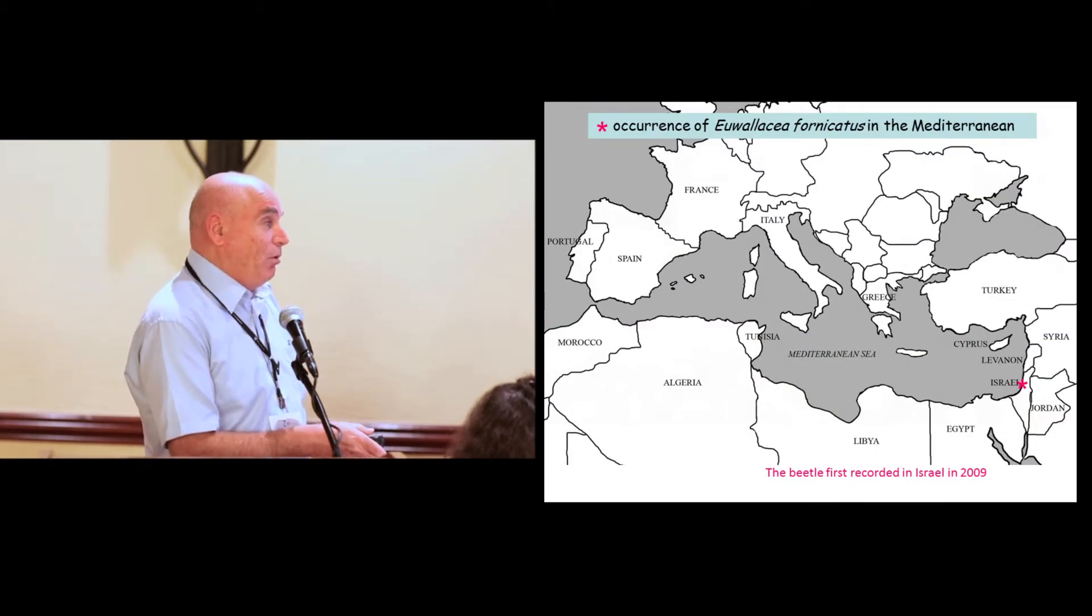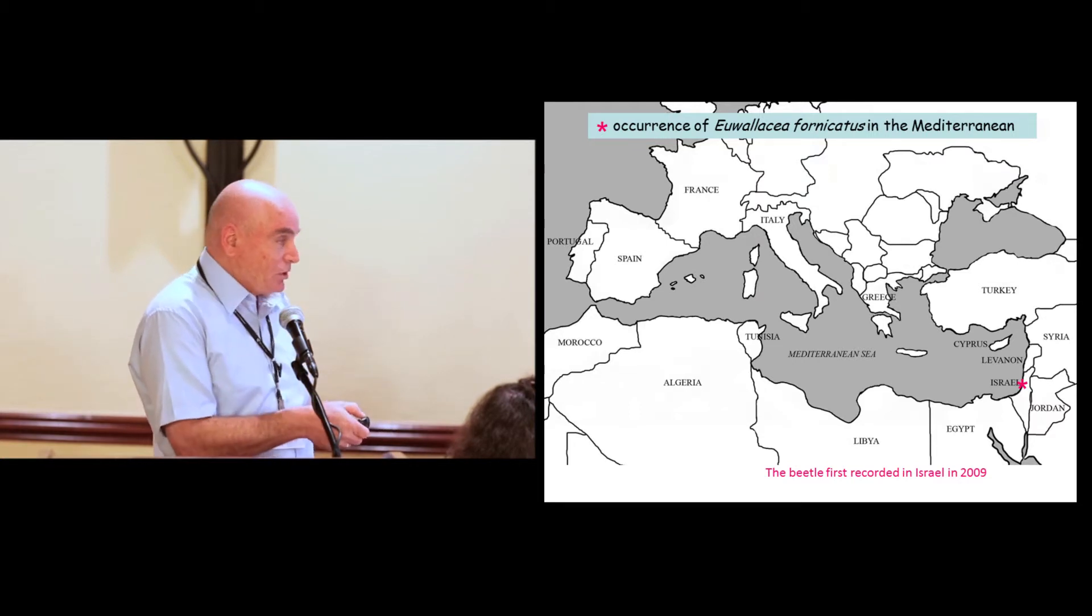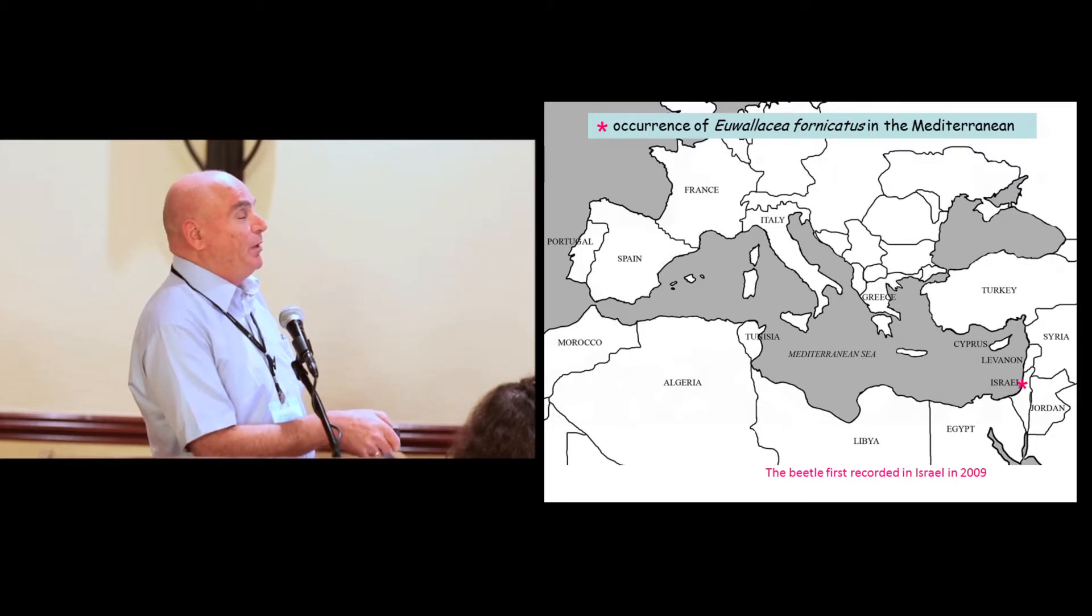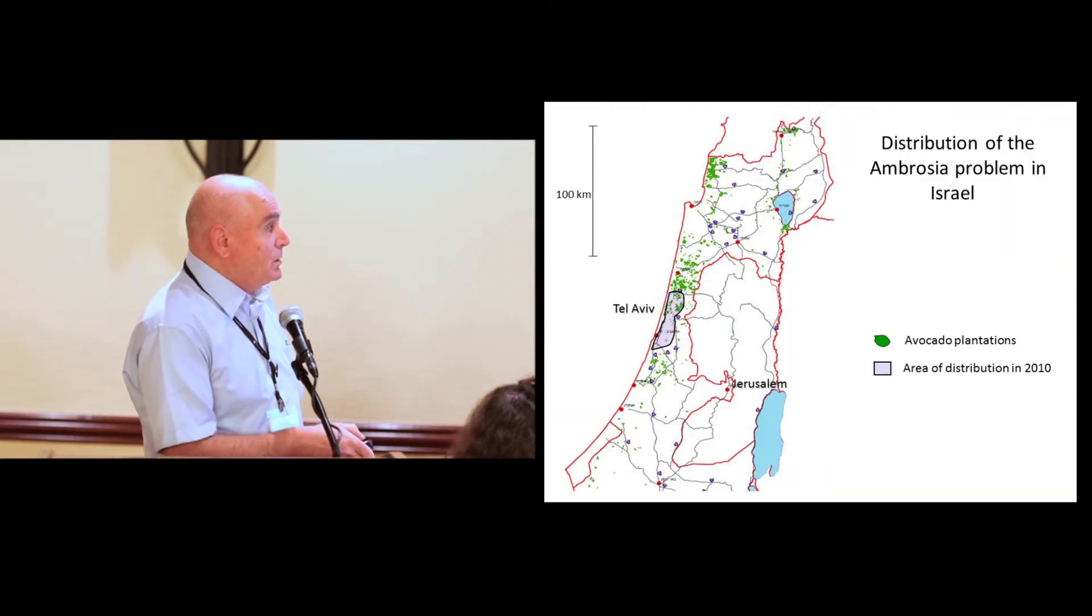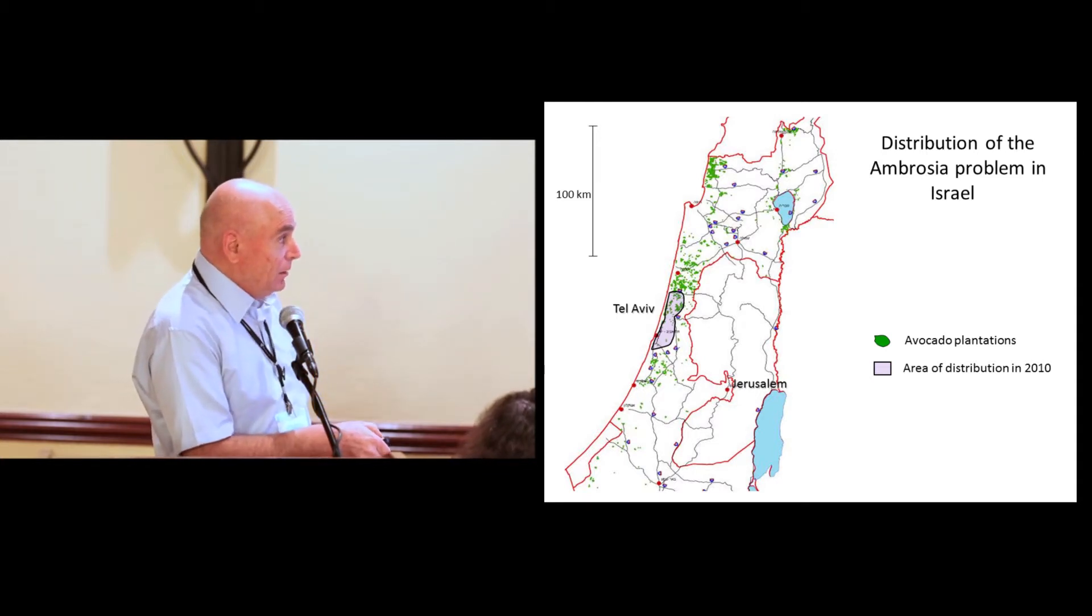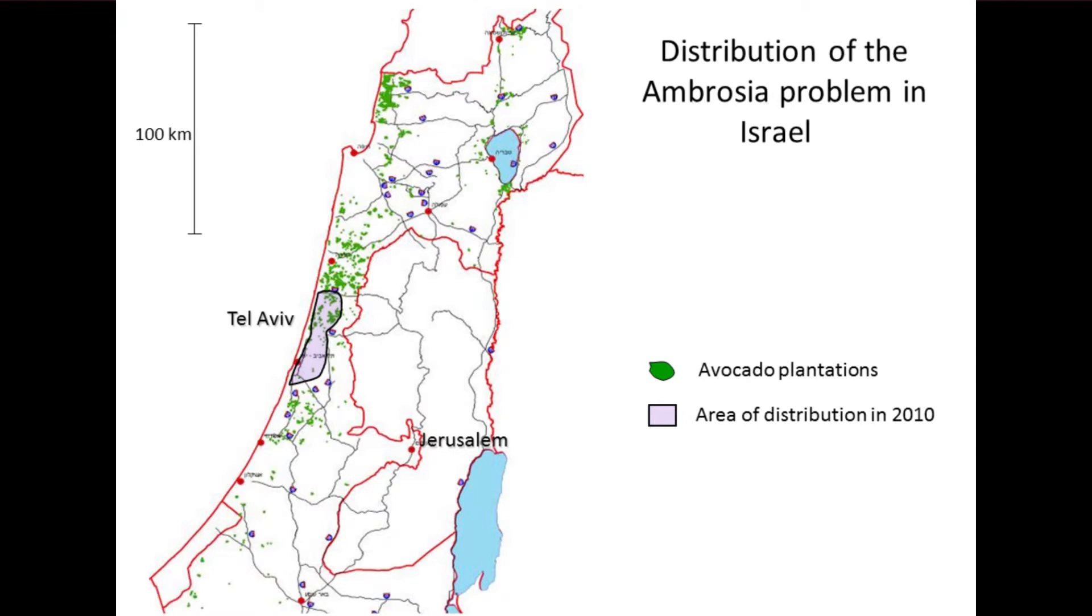At the moment, the beetle or the problem occurs only in Israel here, and I saw it will spread. It takes some time, but it will spread to the neighboring countries, and all neighboring countries cultivate avocado. This is the situation in Israel in 2010. The green spots on the map are the avocado areas, and this is the area which was covered by the problem in 2010. And this is the area which is covered today, after two years. So you can see that the spread is quite rapid.